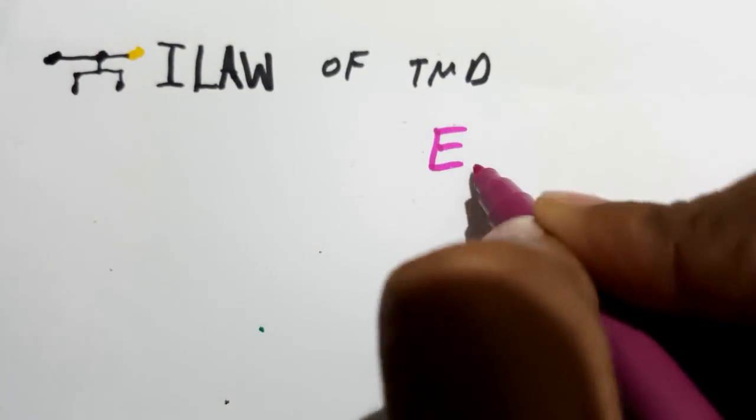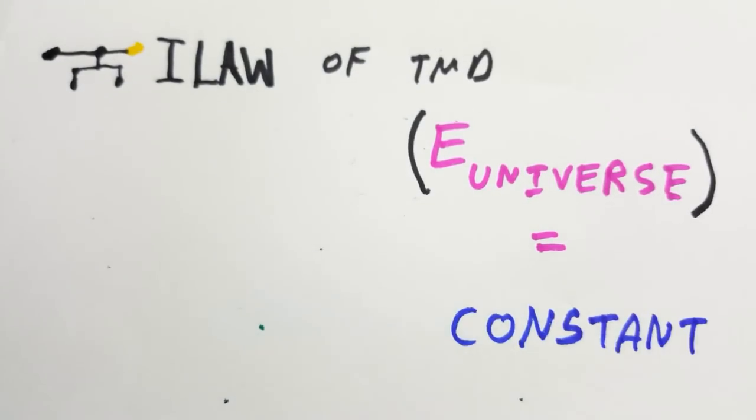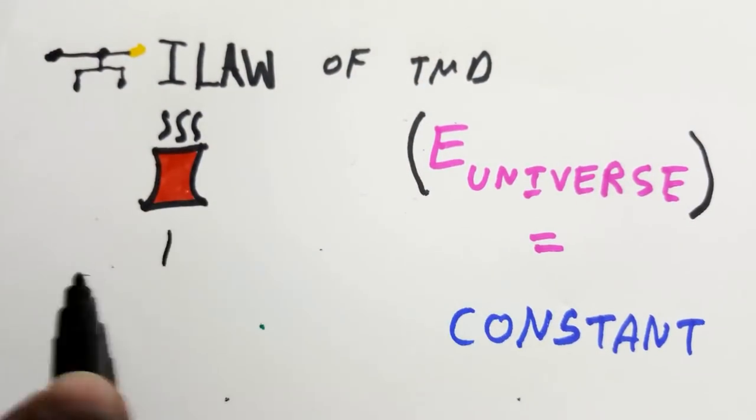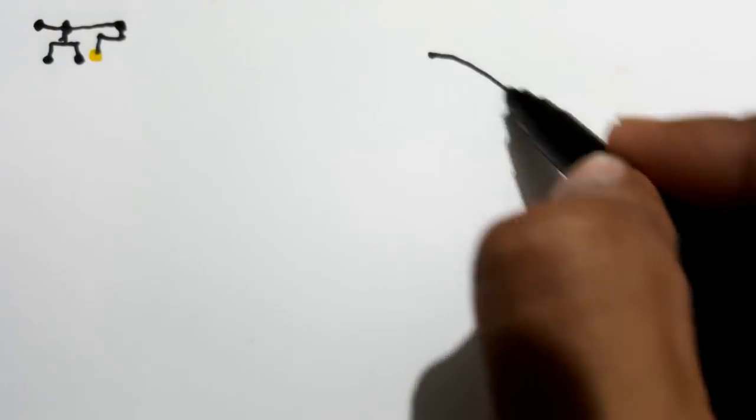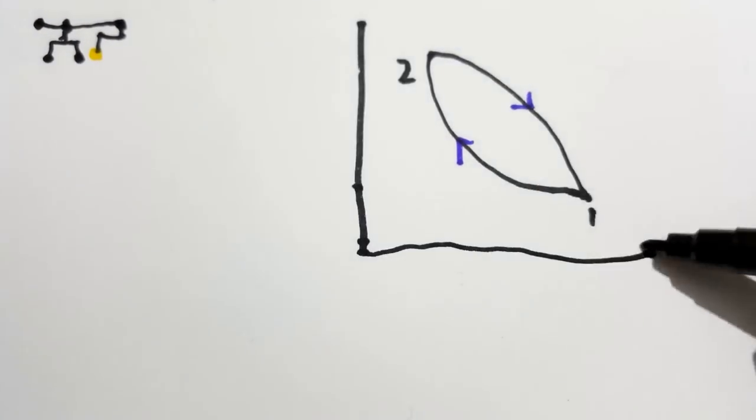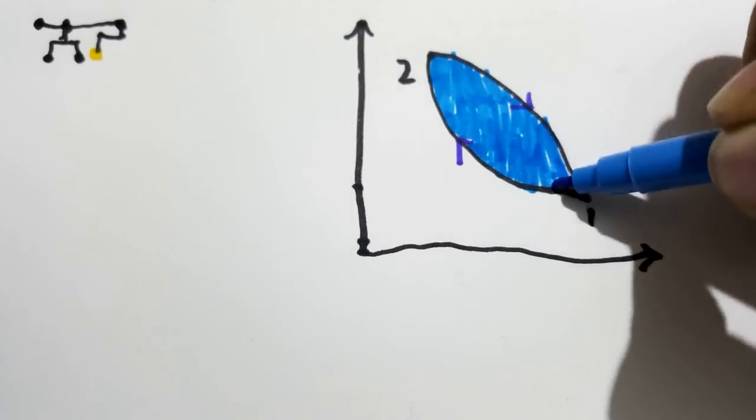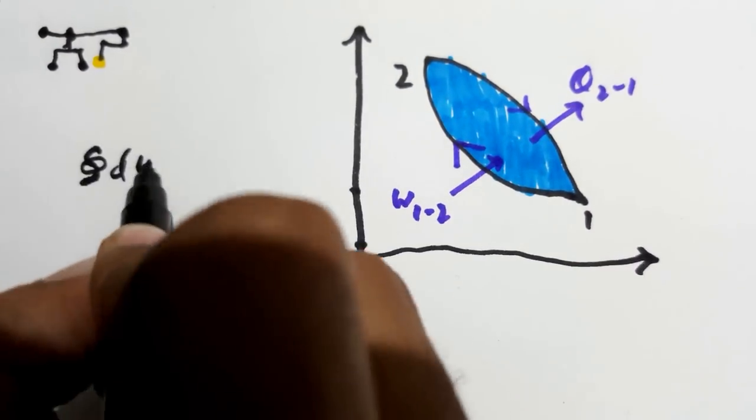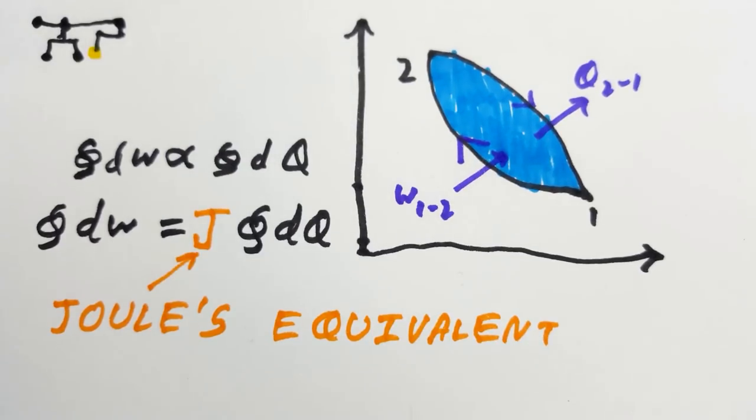The first law of thermodynamics is essentially the law of conservation of energy. But since we need it in the terms of thermodynamics, it can be expressed under two forms. First law for a closed system undergoing a cycle wherein the cyclic integral of the work done is always proportional to the cyclic integral of the heat transferred. The constant of proportionality is called the joules equivalent.